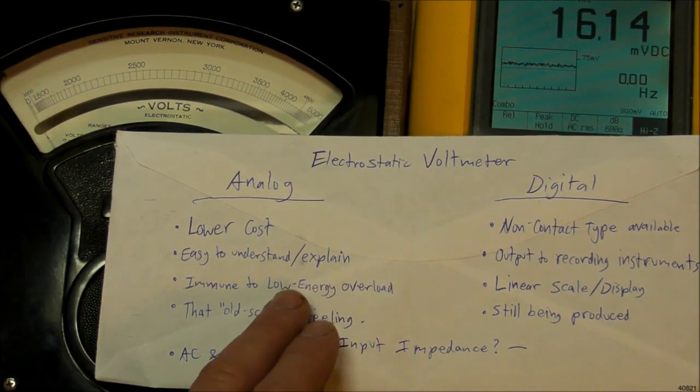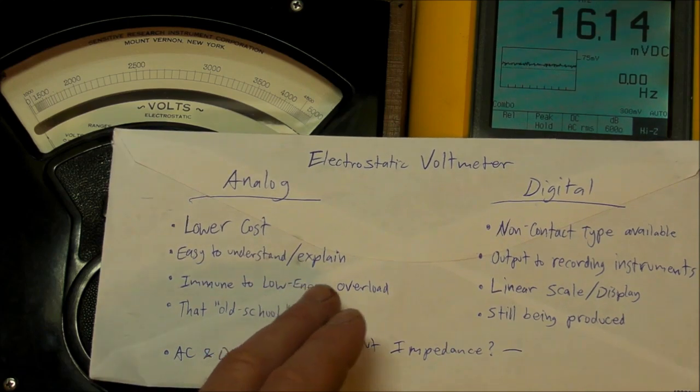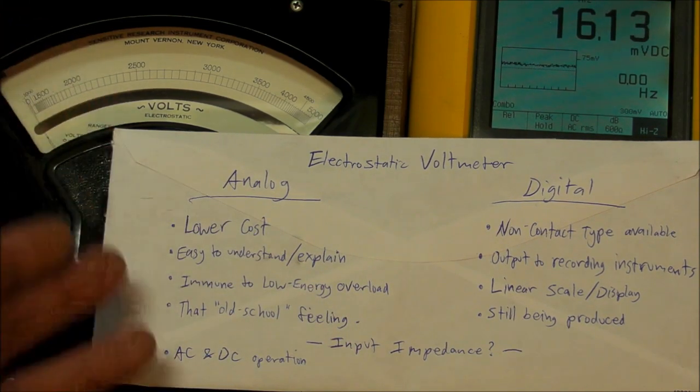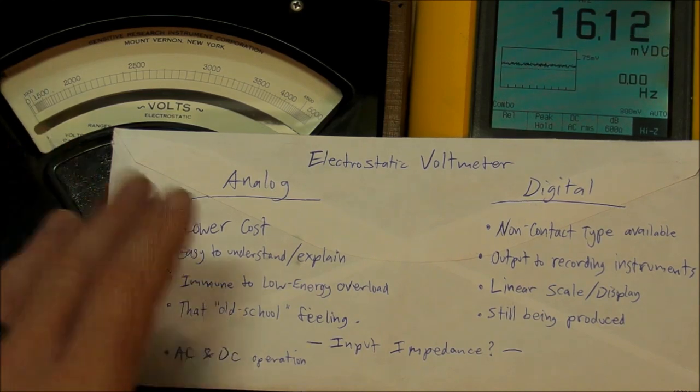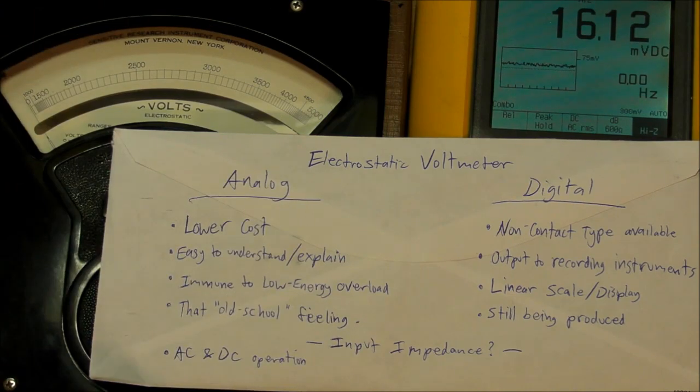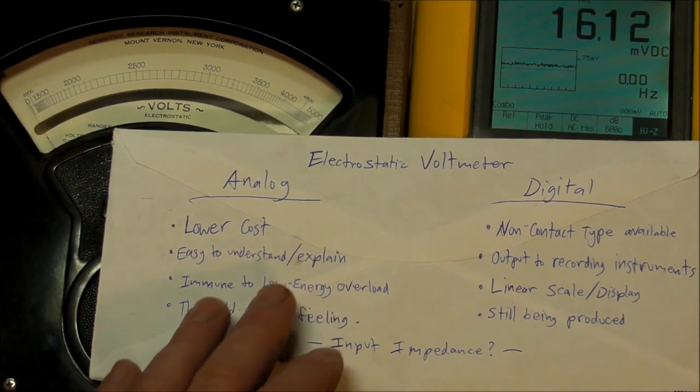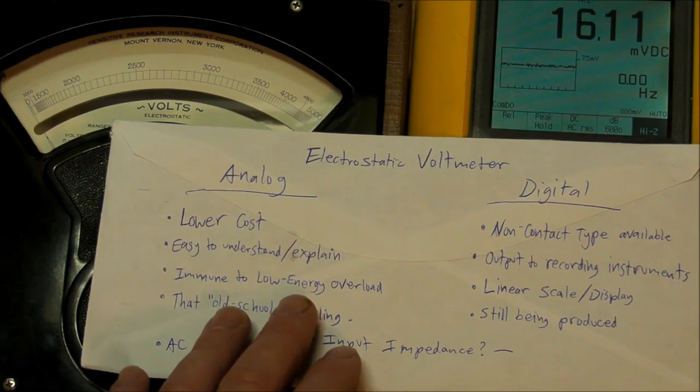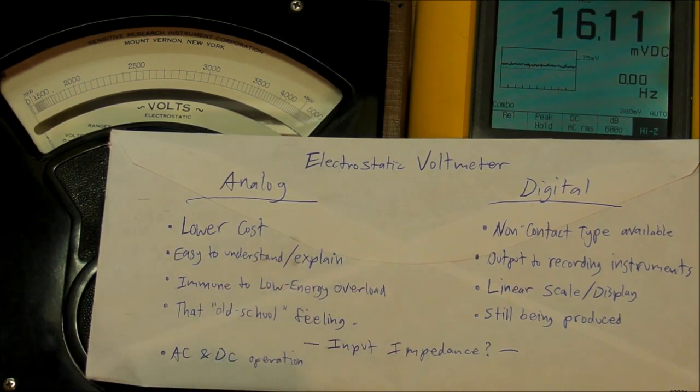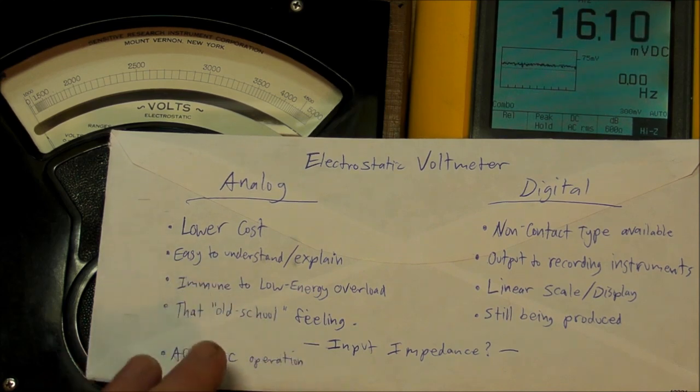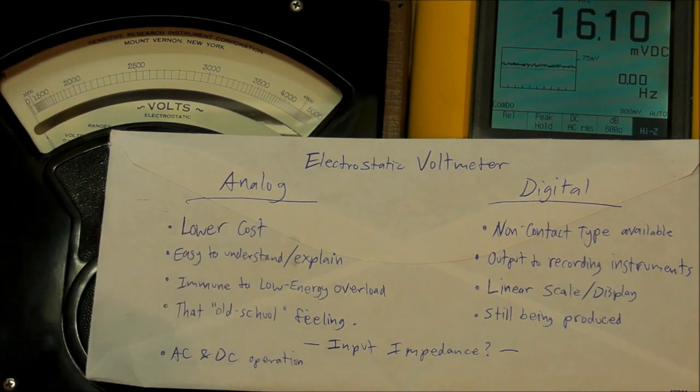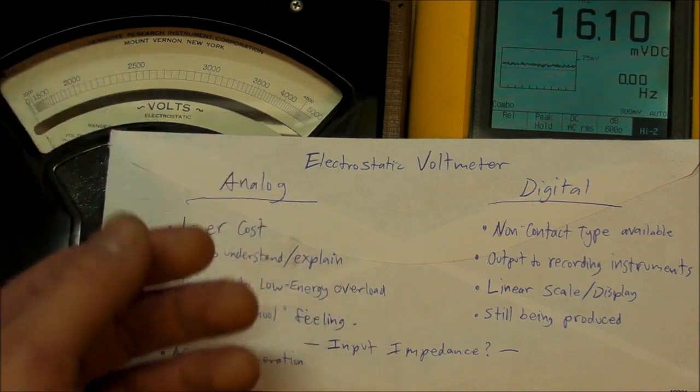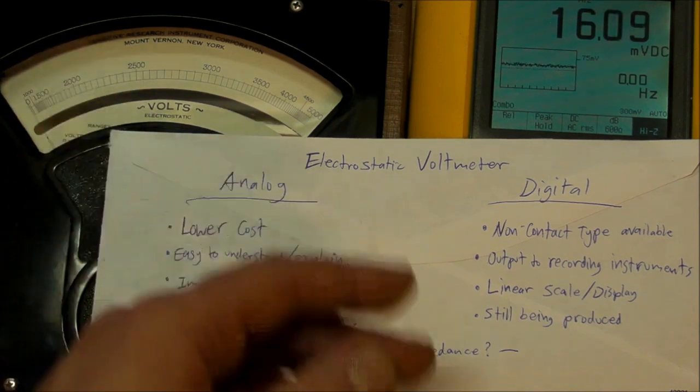Also with digital they very often come with the option to output an analog signal to recording instruments, any kind of analog voltage that's proportional to what it's actually reading. And also linear. Digital meters are pretty much going to be linear scale and we saw already how very non-linear this thing is.